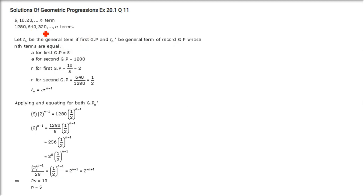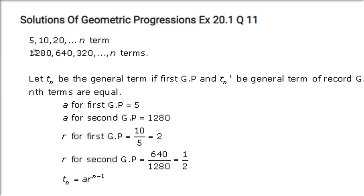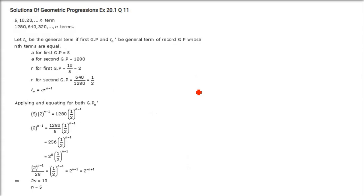Next problem: there are two GPs — 5, 10, 20... and 1280, 640, 320... We need to find which term is equal in both. The nth term of the first series equals the nth term of the second series: a₁·r₁^(n−1) = a₂·r₂^(n−1).